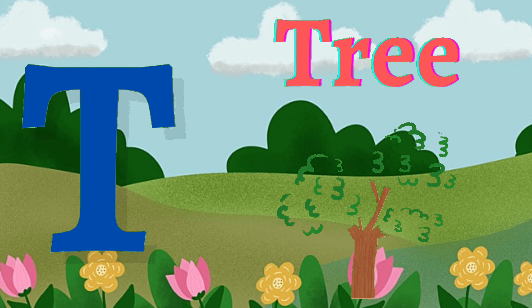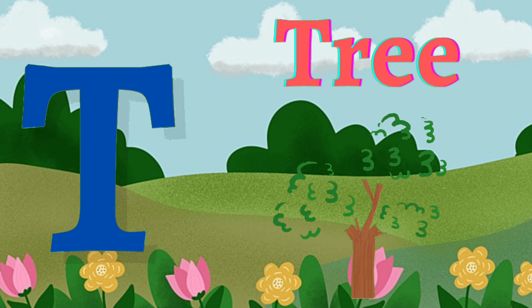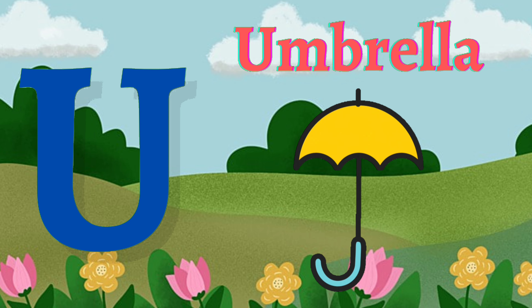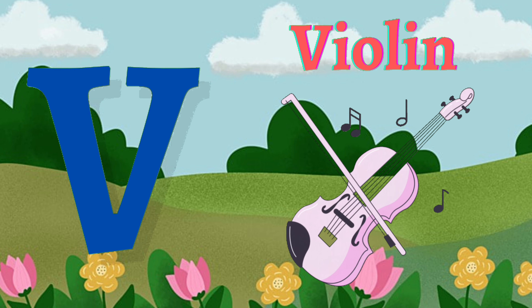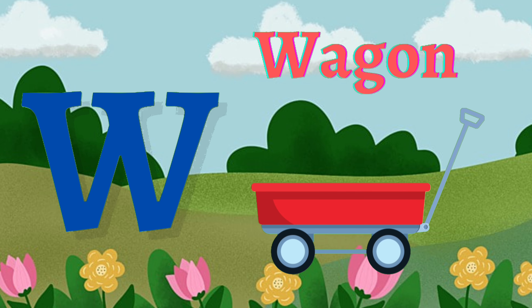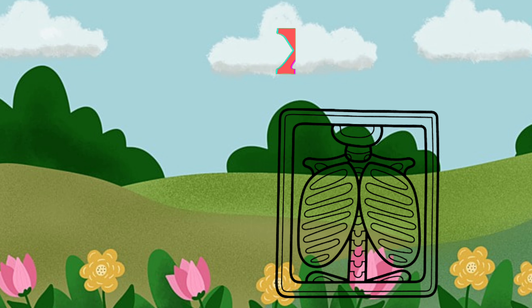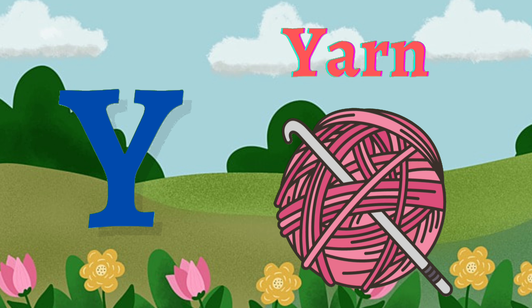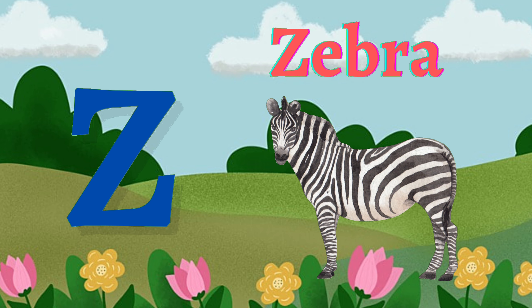T for tree, U for umbrella, V for violin, W for wagon, X for xylophone, Y for yarn, Z for zebra.